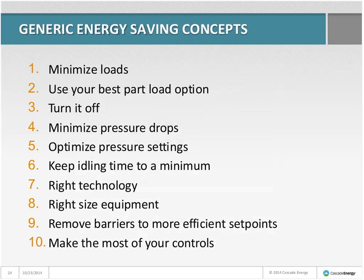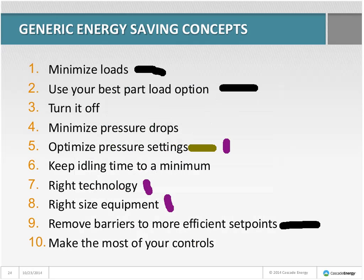Thinking back to the 30-horse compressor running a palletizer: what did these guys do to save energy? Definitely number two — use your best part-load option. The compressor already had load-unload control; they just needed to use it. And number five — optimize the pressure settings. They didn't need 129-PSI air; they just needed to keep it above 90. And number ten — make the most of your controls.